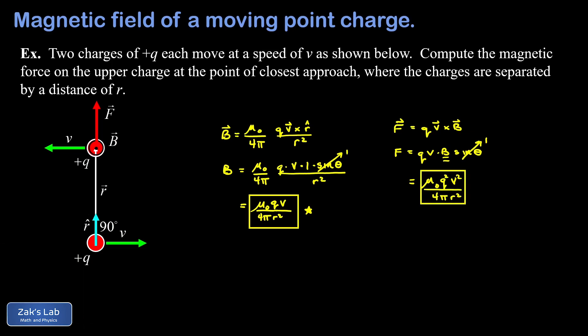In the next video, we're going to use this formula for the magnetic field generated by a point charge to derive the Biot-Savart law. That's a formula that tells us how to compute the magnetic field due to a steady current in a wire with any arbitrary shape. I'll post the link to that video at the upper left when it's done, and I'll see you there.